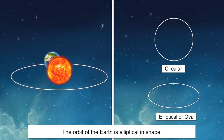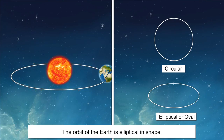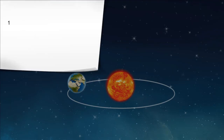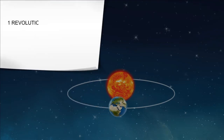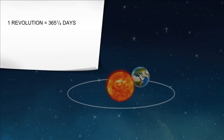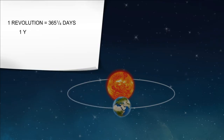Do you know that the shape of the earth's orbit is not circular but elliptical, or oval, in shape? The earth takes about 365 and one-fourth days to complete one revolution.